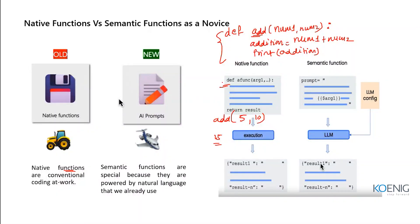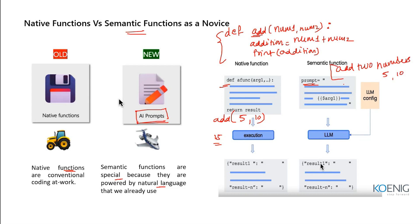Native functions require complete knowledge of writing code in Python or any other language. But if you have zero idea or you are a newbie, you can take help of the semantic function. You pass an AI prompt, and using that prompt, the semantic function will help you generate the respective output. For example, you just say 'I want to add two numbers, 5 and 10,' and the output of 15 will be given to you.